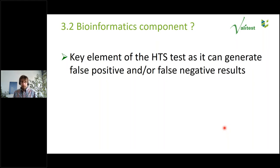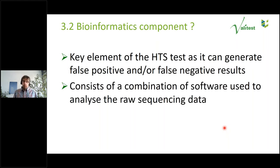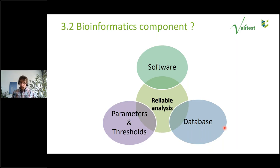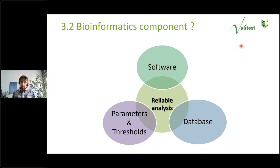Bioinformatics can generate false negative or false positive results. It usually consists of a combination of software to analyze raw sequencing data — even a one-click software contains different algorithms. Reliable analysis depends on three elements: the software used, the database used, and the parameters and thresholds used. You can have the most appropriate software and the most updated database, but use one wrong threshold and it will puzzle your results. All three elements must be taken into account to achieve a reliable analysis.